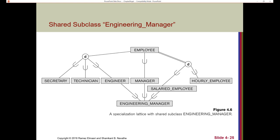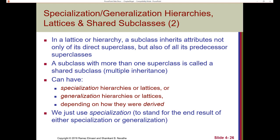We have engineering manager classified as an engineer, a manager, as well as a salaried employee — so it's inheriting attributes from all three of these superclasses. In a lattice or hierarchy, a subclass inherits attributes not only of its direct superclass, but also of all its predecessor superclasses — everything above it counts. A subclass with more than one superclass is called a shared subclass, which is a case of multiple inheritance. We can have specialization hierarchies or lattices or generalization hierarchies or lattices depending on how they're derived, but we'll just use specialization to stand for the end result, since we can always think of it as top-down.